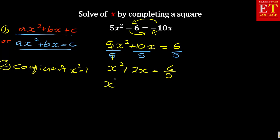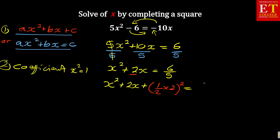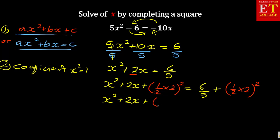Now completing the square, you say x squared plus 2x plus — you introduce half the coefficient of x. The coefficient of x is 2, so it's half times 2, squared. That's what you introduced. It is equal to 6 over 5. And since what you do on the left you also do on the right, you add 1 over 2 times 2 squared on the right as well. Half of 2 is 1, so you leave it as 1 squared, and the right-hand side becomes 6 over 5 plus 1 squared.